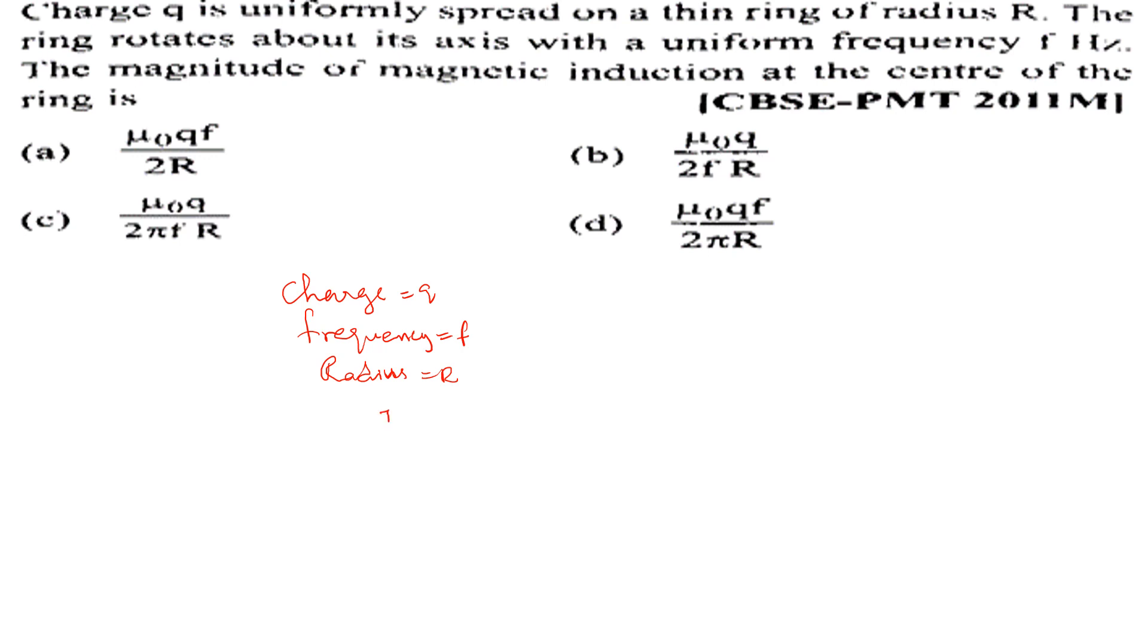The current in the ring is i equals rate of flow of charge. The ring is the total time period. Q equals 1 by T. 1 by T is the reciprocal time period, use frequency.